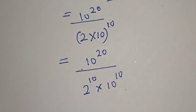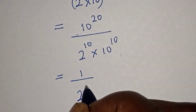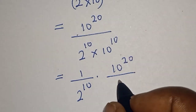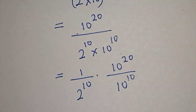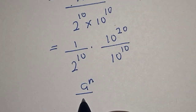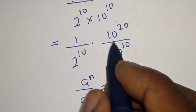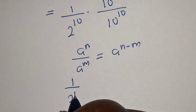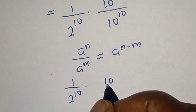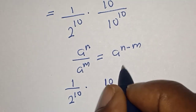This is equal to 1 over 2 raised to power 10, multiplied by 10 raised to power 20 over 10 raised to power 10. Now, if you have a raised to power n over a raised to power m, this is equal to a raised to power n minus m.